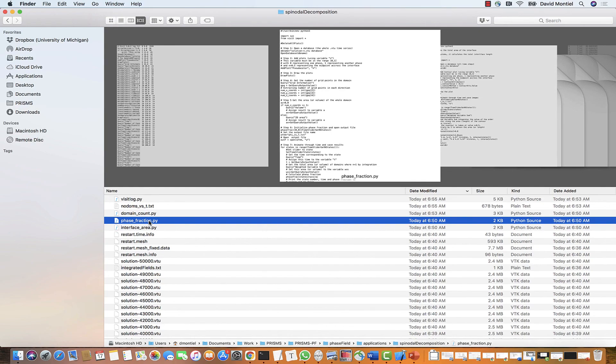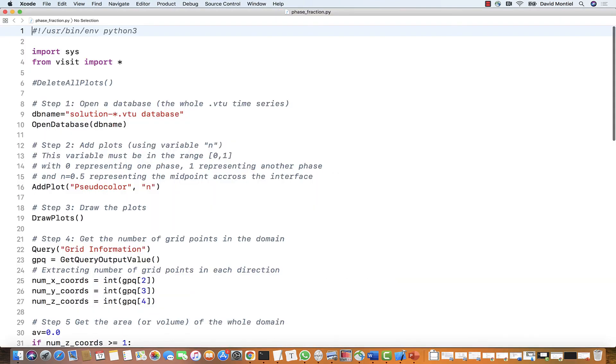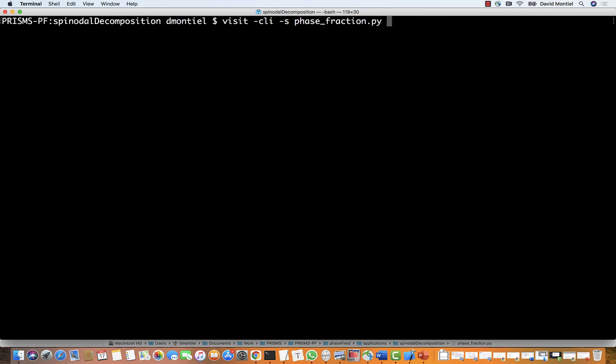Let's move on to our next script, phase fraction. This script simply will calculate the volume of one of the phases and divide it by the total volume. Or the same, but with area in the 2D case. Again, before running it, let's not forget to change the variable name to C. And once more, by default, it'll give us the fraction of red phase. But we can easily change that to the fraction of blue phase if we wanted that. Again, we run it using this command on the terminal.